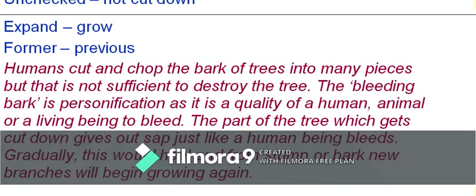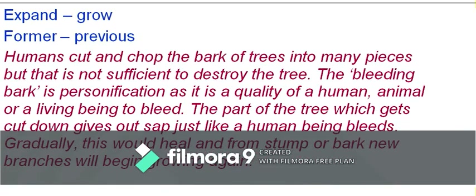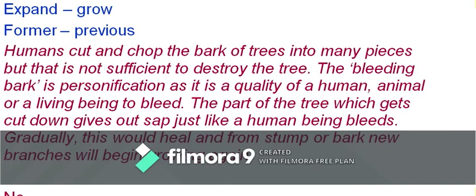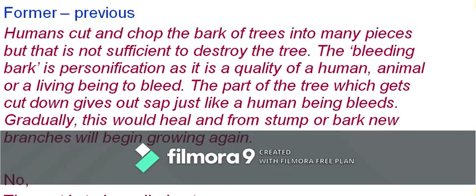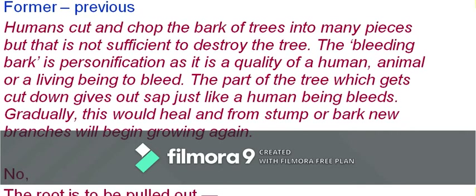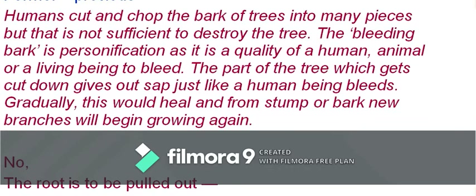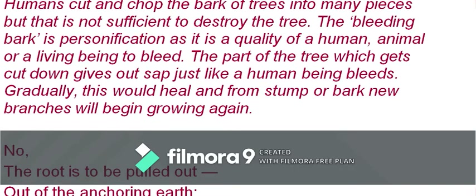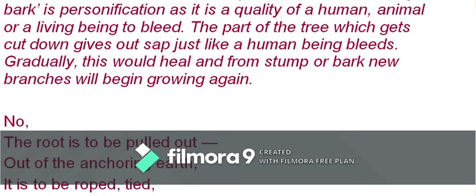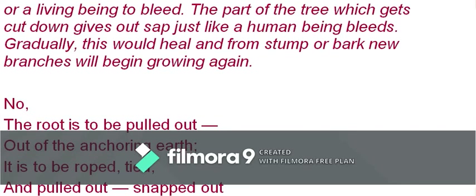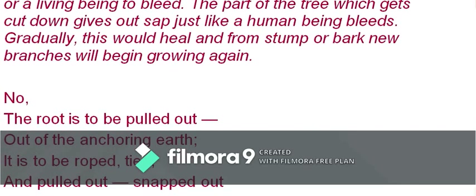Humans cut and chop the bark in many pieces, but that is not sufficient to destroy the tree. 'Bleeding bark' is a personification — bleeding is a quality of a living being. The sap flows out just like a human being bleeds from a wound. Gradually the wound heals, and from the stump or bark new branches will grow again.